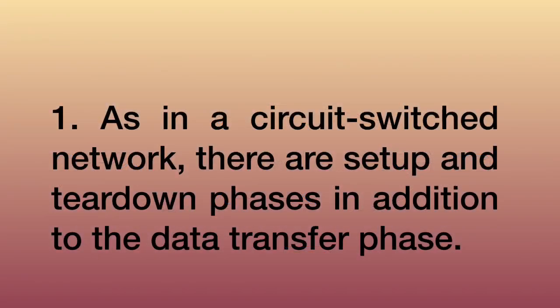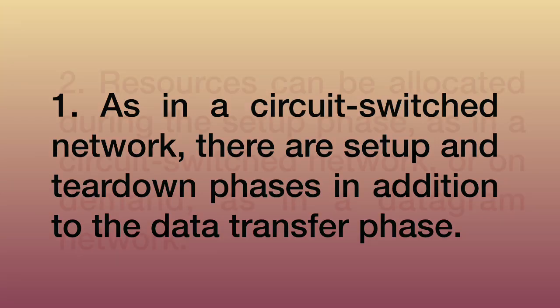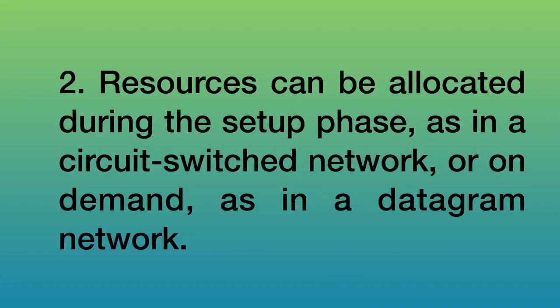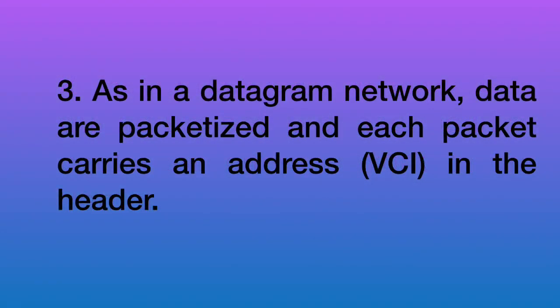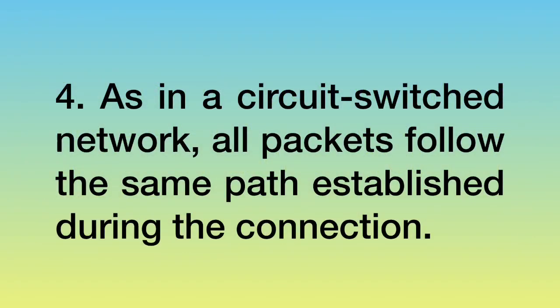There are 5 characteristics to note. Virtual circuit has setup and teardown phase as in circuit switched network. Resources can be allocated during the setup phase as in a circuit switched network or on demand. Each packet contains a local address called as VCI, that is virtual circuit identifier. All the packets follow the same path established during the connection.